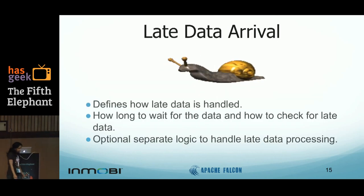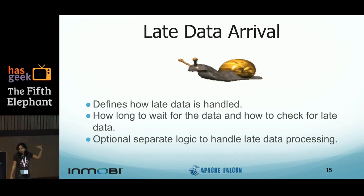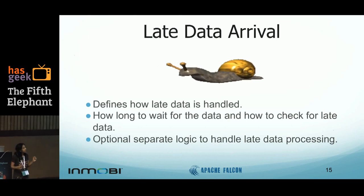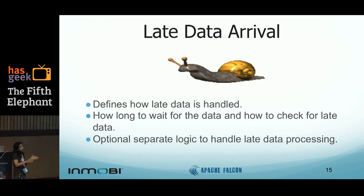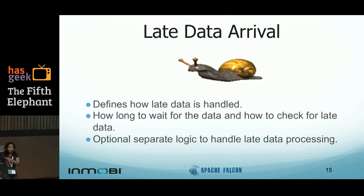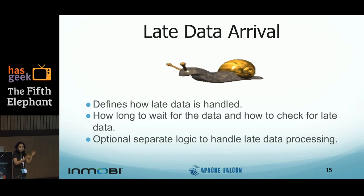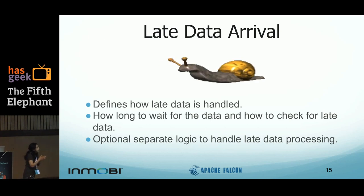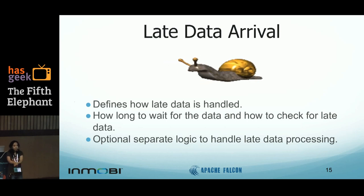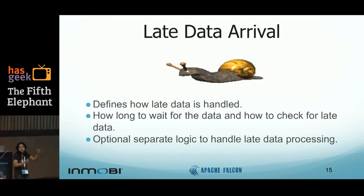Late data arrival. Let's take the clicks example: a click was supposed to have been logged at the zeroth hour but it doesn't happen for some reason — some delay upstream. It comes in the first hour, but when it comes in, all the zeroth hour processing has already been done in the whole pipeline. My hourly billing has already happened, so I need to handle this differently. I'll probably need to reprocess the zeroth hour data all over again to account for these new late clicks. The way you want to handle this is: let the existing pipelines go through — don't affect them — but still be able to detect that something arrived late and process it accordingly.